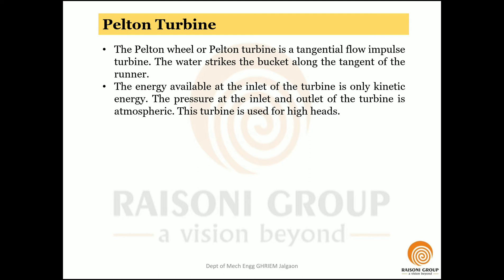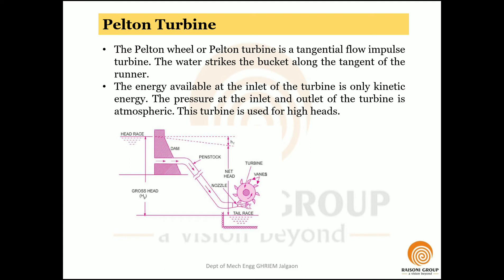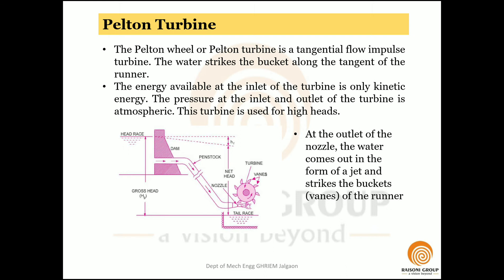This turbine is named after American engineer Lester Pelton, hence the name Pelton turbine. The figure shows the layout of a hydroelectric power plant in which the turbine is a Pelton wheel. Water from the reservoir flows through the penstock, at the outlet of which a nozzle is fitted. The nozzle increases the kinetic energy of the water, and at the nozzle outlet the water comes out as a jet and strikes the buckets of the runner.